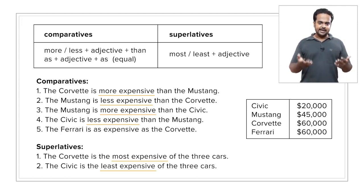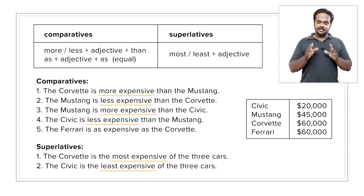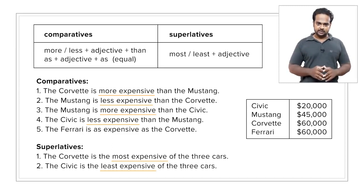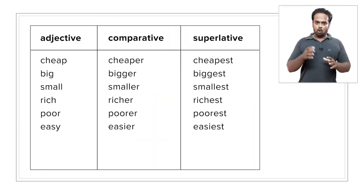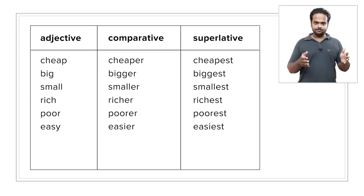So what kinds of mistakes do students make with comparatives and superlatives? Mistakes commonly occur in the ER, EST, and irregular forms of adjectives. With some adjectives, instead of saying more and most, we add the endings ER and EST. For example, we don't say 'more cheap,' we say cheaper, and we say cheapest, not most cheap. In the same way, we have big, bigger, biggest; small, smaller, smallest, and so on.